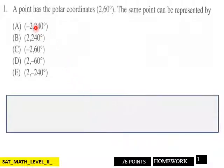And page 1 of the homework, a point has polar coordinates of 260 degrees. The same point can be represented, and here's your choices here. Six points here, page 1.